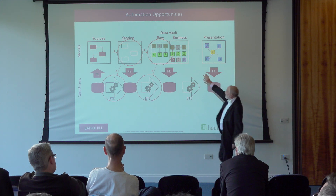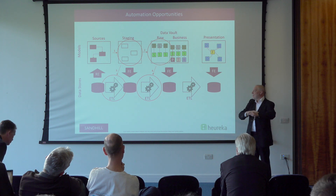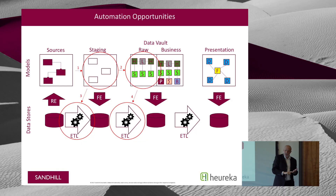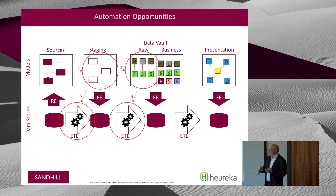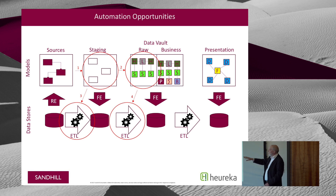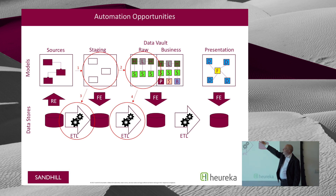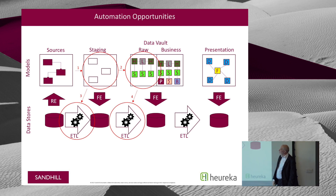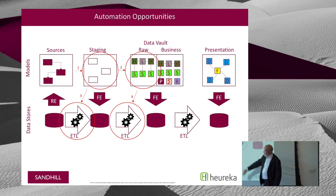The business vault involves some extra table types: things called point-in-time tables, summary tables, and bridge tables, which are all ways to reduce the amount of query overhead in the database. There's a certain amount of subjectivity in that design, so there's no automatic process for it. Similarly, when we get to the dimensional design, that can be fairly subjective as well. So we concentrate on just those four automated areas.